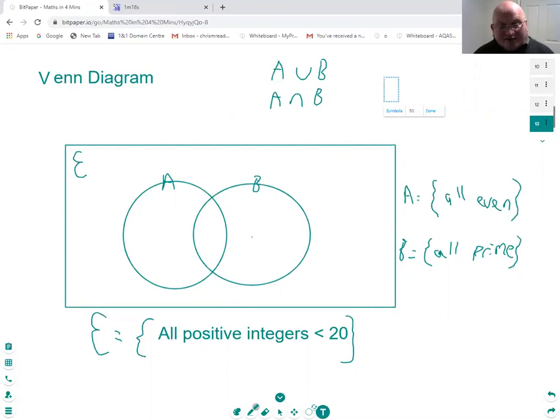And we can actually write in here now where these numbers go. I probably won't do them all since I've only got a minute left. But, for example, number two is in set A because they're all even numbers, and prime, it's a prime number, it's the only even prime. So, two would go in there.